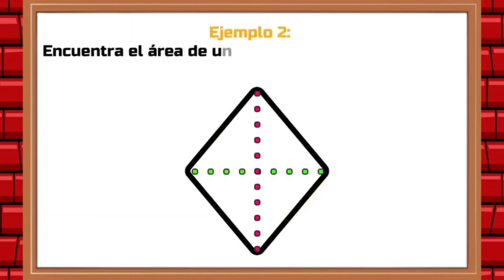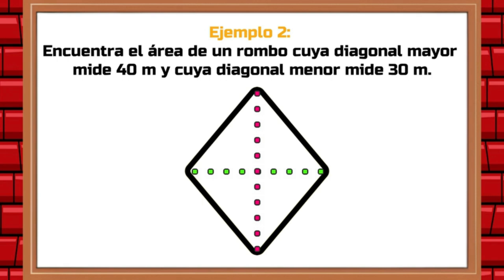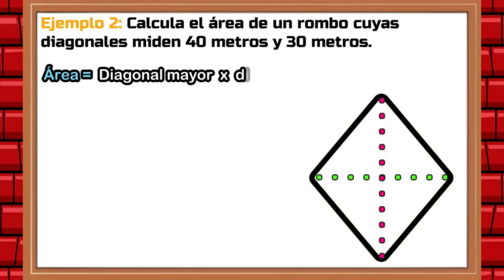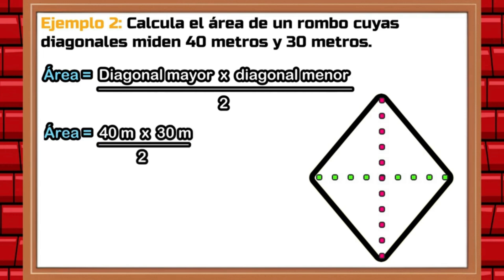Example 2. Calculate the area of a rhombus where the major diagonal measures 40 meters and the minor diagonal measures 30 meters. We use the formula: area is equal to major diagonal times minor diagonal divided by two. We substitute the values into the formula, resulting in: area is equal to 40 meters times 30 meters divided by two.